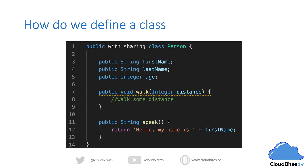So let's look at how we define a class. We've defined our Person class here. At the top we have the phrase 'public with sharing class Person'. Public is the accessor — it means that the class can be used within our namespace or organization if we're not in a package. We can also have private classes if they are an inner class, that is one defined within another class, or a test class. And we can also have global classes, which are ones that could be used for things such as API calls or use outside a package.